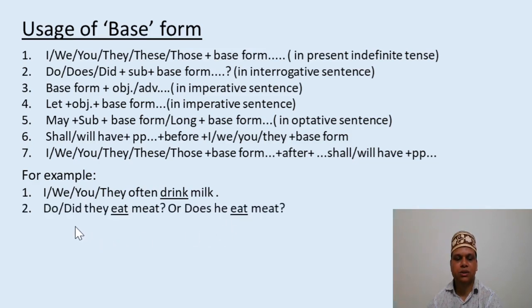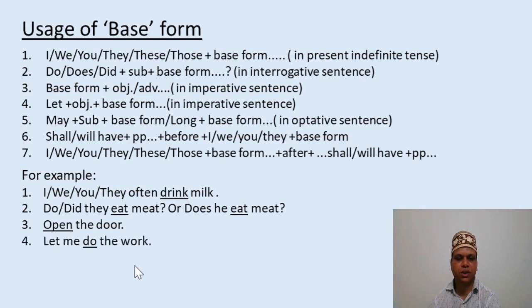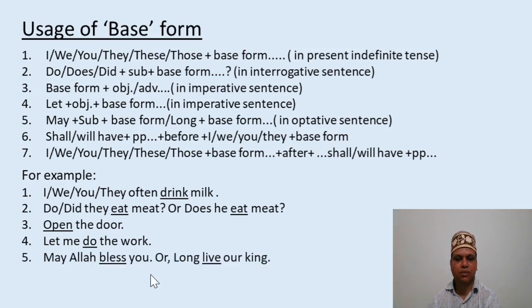Do/did follow the base form in interrogative sentences — for example, 'Do they eat meat?' 'Did they eat meat?' 'Does' follows the S form. 'Open the door' is an imperative sentence, so when we order or command a person we use the base form. 'Let me do the work' is also an imperative sentence — 'let' follows the base form. 'May I love — God bless you' and 'Long live our king' — in optative sentences, 'may' and 'long' follow the base form.